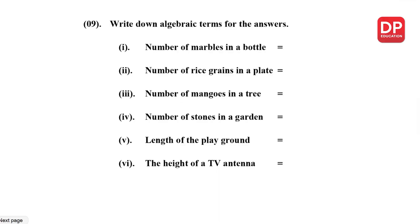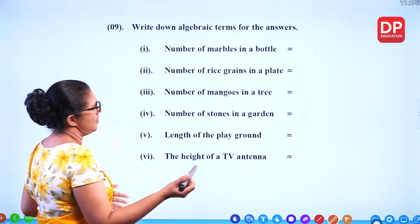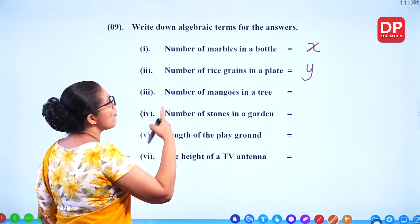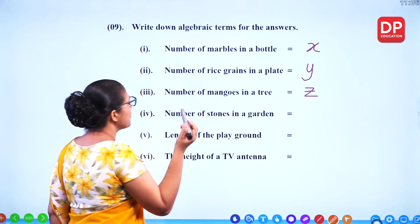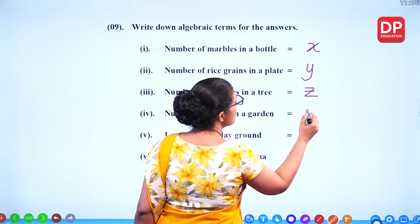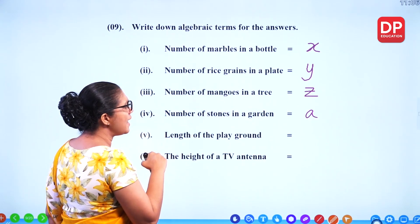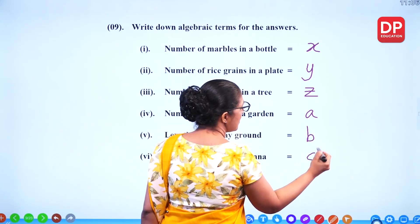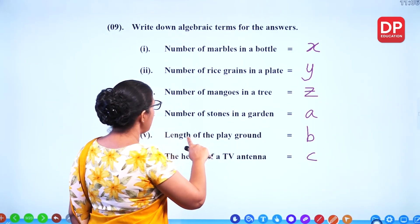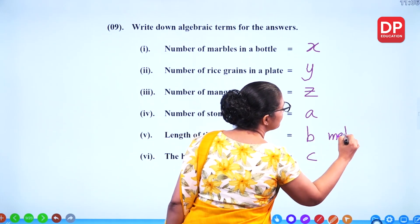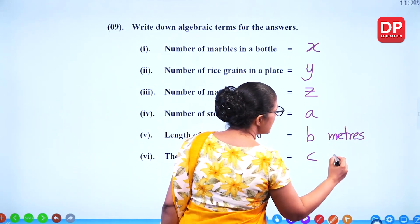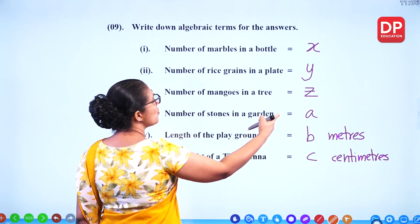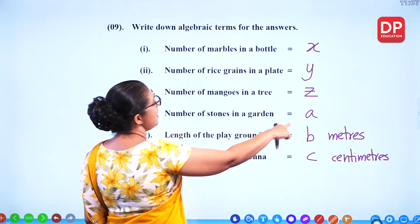Write down algebraic terms for the following. Number of marbles in a bottle — we can put X or any letter you like. Number of rice grains in a plate — Y. Number of mangoes in a tree — Z, we don't know. Number of stones in a garden — it's difficult to count, put A. Length of the playground — B metres. The height of a TV antenna — C centimetres. Depend on the units, you write the appropriate unit.